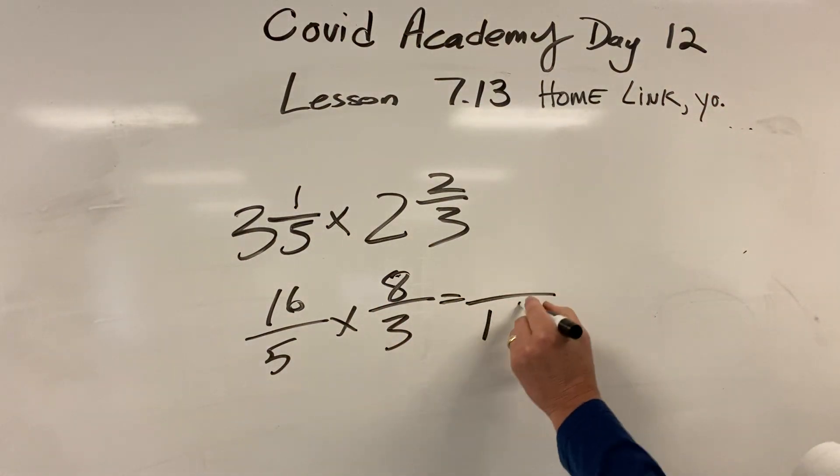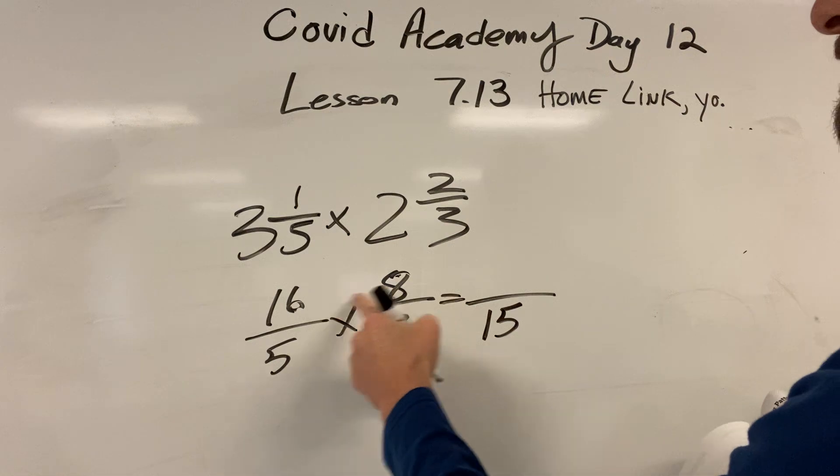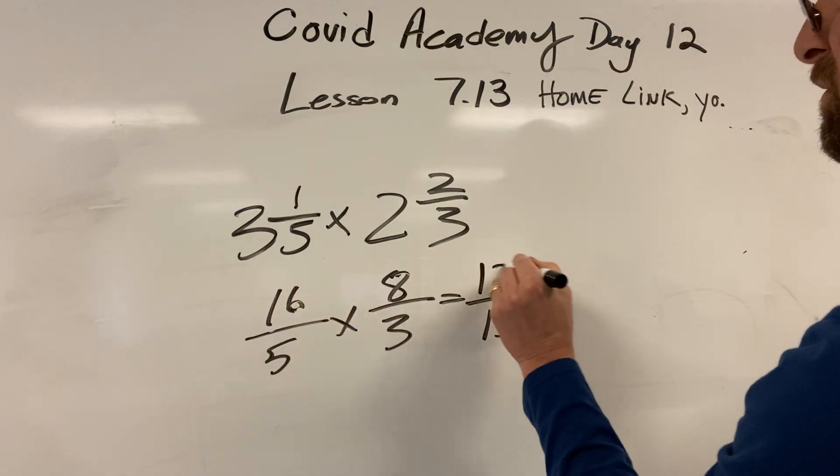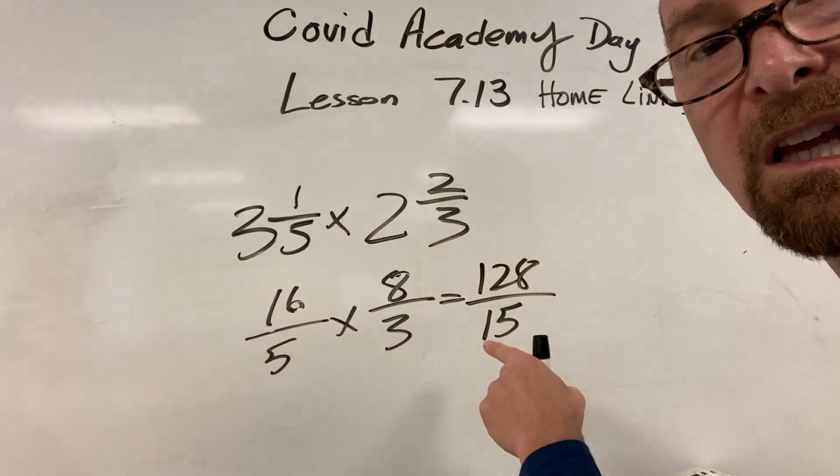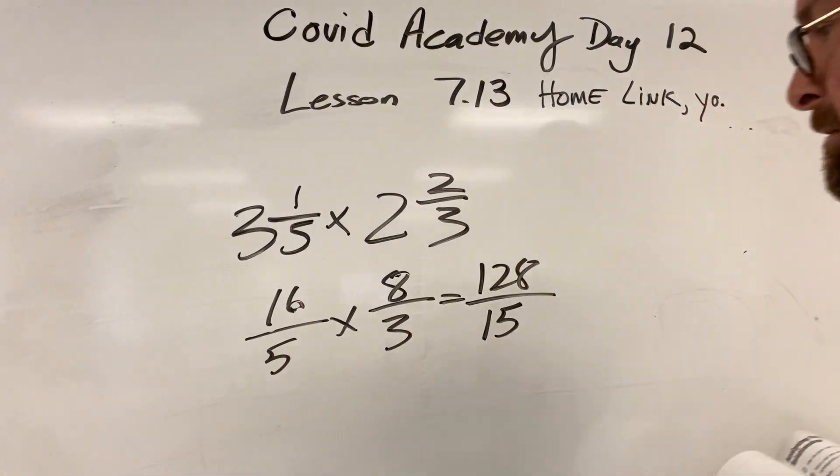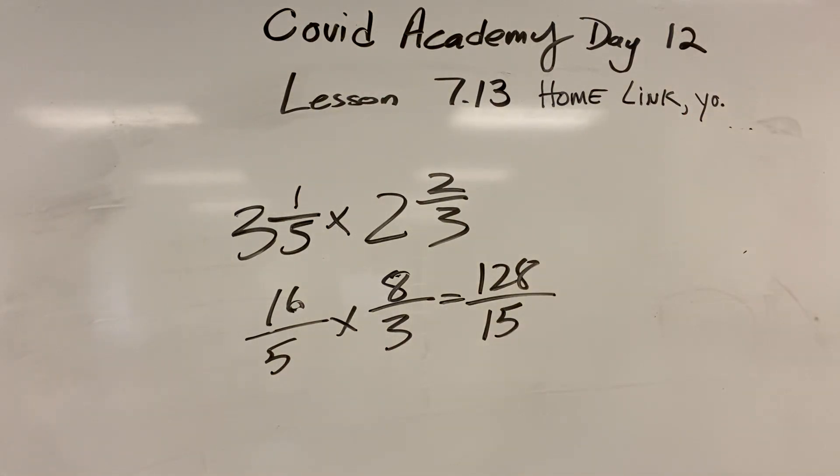Okay, maybe it's not a great idea. 16 times 8 is 80 and 48, that's 128. You can leave it like that, I don't care. If you find the final answer, it really is 8 and 8 fifteenths.